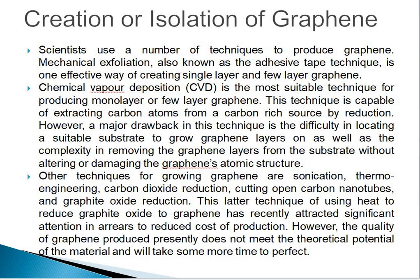Creation or isolation of graphene: scientists use a number of techniques to produce graphene. Mechanical exfoliation, also known as the adhesive tape technique, is one of the effective ways of creating single-layer and few-layer graphene. However, various research institutions worldwide are trying to find the most efficient way of creating high-quality and cost-effective graphene on a large scale. Chemical vapor deposition (CVD) is the most suitable technique for producing monolayer or few-layer graphene, and is capable of extracting carbon atoms from a carbon-rich source by reduction.